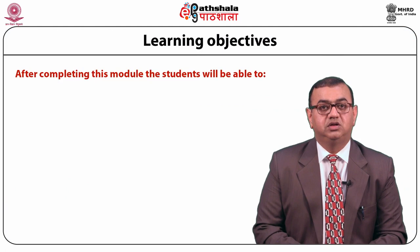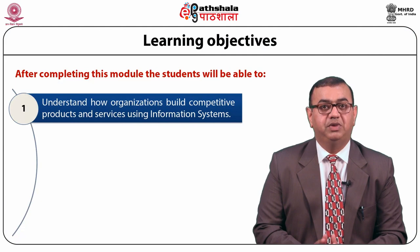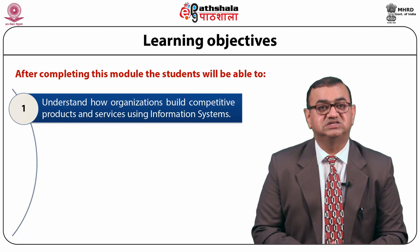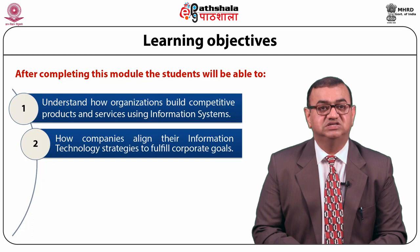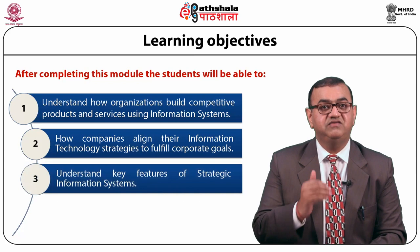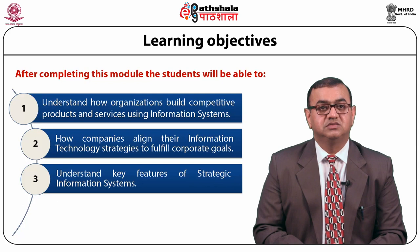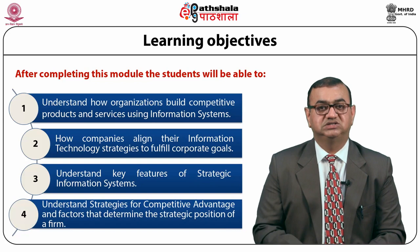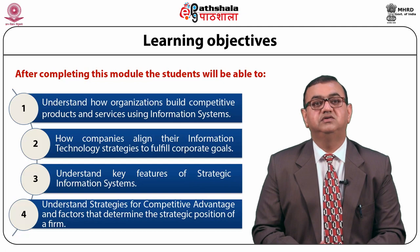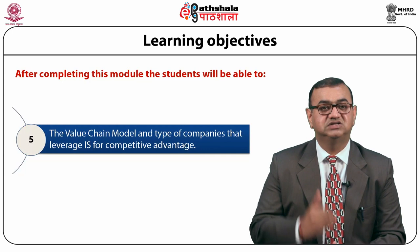After completing this module, the students will be able to understand how organizations build competitive products and services using information systems, how companies align their information technology strategies to fulfill corporate goals, understand key features of strategic information systems, understand the strategies for competitive advantage and factors that determine the strategic position of a firm, the value chain models and types of companies that leverage information systems for competitive advantage.